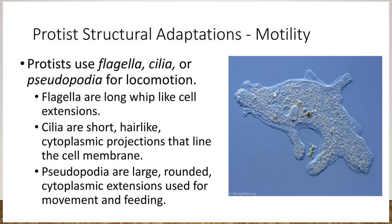Structural adaptation for motility: we have the flagellates, which have long whip-like materials and move using their flagella. We have the ciliates, which have short hair-like cilia and move via the cilia. We also have the pseudopods, which move by extending their cytoplasm.